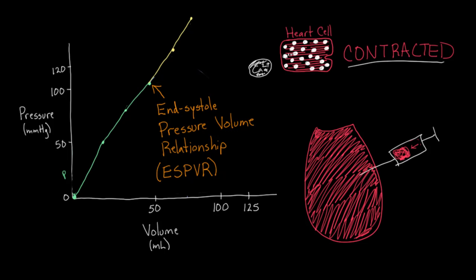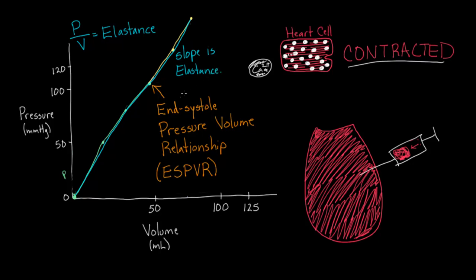One final point: there's a relationship between elastance, pressure, and volume. If you take pressure divided by volume, that gives you elastance. With this line we've drawn, there's a slope to it — and that slope is the elastance. Wherever the pressure-volume loop falls on this ESPVR, you'll sometimes see the line labeled E0. So E0 refers to the slope of the line formed at the end of systole.